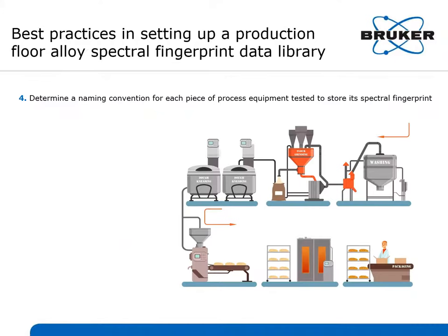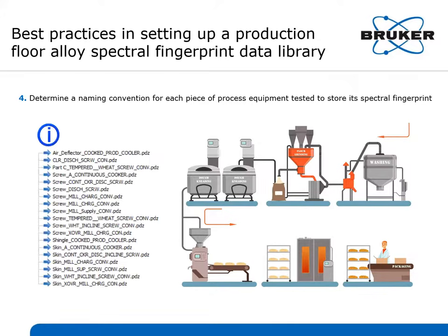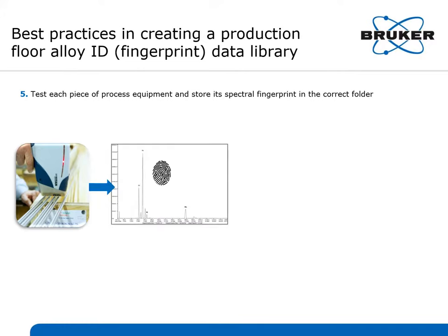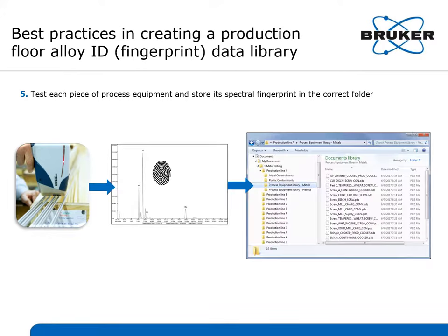You need to determine a naming convention for each piece of process equipment you will test to store its spectral fingerprint in the library. For instance, you could use names like Air Deflector Cooked Production Cooler, Part C Tempered Wheat Screw Conveyor, Shingle Cooked Production Cooler, or Skin A Continuous Cooker. The naming convention needs to make sense to your particular production line. Finally, test each piece of process equipment and store its spectral fingerprint in the correct folder. Once your library is created, you are ready to identify the source of contaminants found during production.